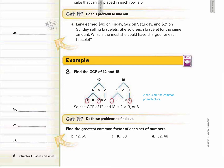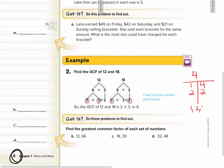Today we're going to be learning about greatest common factors, and we are starting on workbook page 8. Factors are numbers that go into another number. For example, the factors of 4 would be 1 times 4, because those both go into 4, and 2 times 2. So all the numbers that go into 4 are 1, 2, and 4. The first two factors of any number are always going to be 1 and the number itself.